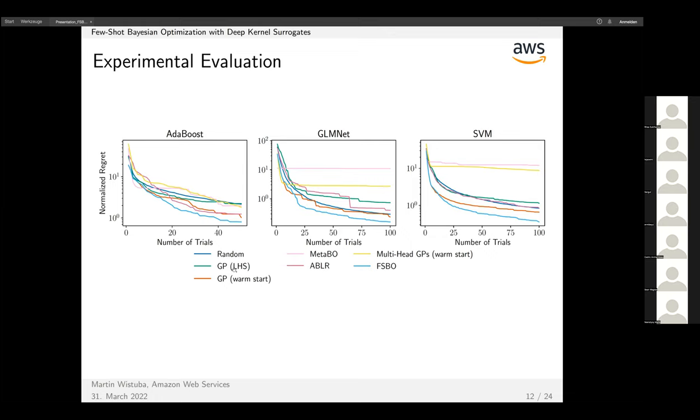These are our first results on three different datasets. On the x-axis we have the number of trials up to 100, and on the y-axis we report the normalized regret. For each dataset we normalize the regret to zero and one to average over them.